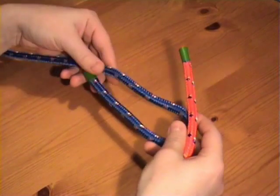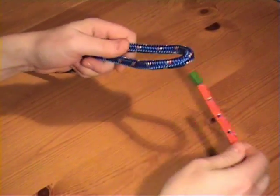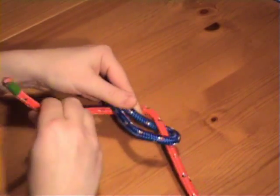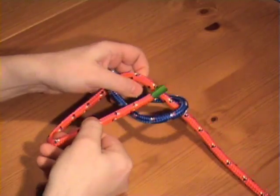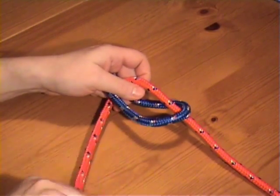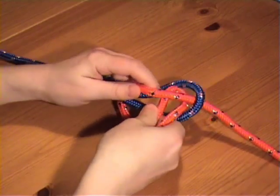There's a slipped version of the sheet bend for quick release. You form the sheet bend as normal, but then instead of tucking the working end under itself, you form a bight and tuck that under instead.